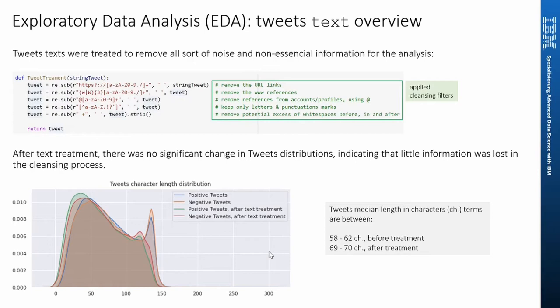Here I list the text treatments executed to remove all sorts of noise and noisy information for the analysis. The applied treatment will remove URL links and www references. I have also removed references to Twitter profiles and hashtags, numbers and symbols, and potential excess of white spaces. The chart below shows that after cleaning the text, we see no significant change in tweets' character length distribution, indicating that no relevant loss of information has occurred.